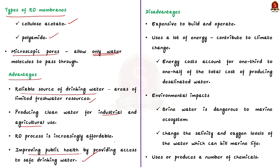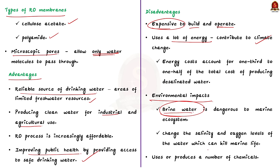Even though it has many advantages, there are still some concerns regarding desalination plants. First, these plants are very expensive to build and operate. Next, desalination plants use a lot of energy, which can contribute to climate change since it is an energy-intensive process. The environmental impacts are very huge. The concentrated salt water, called brine water, is a byproduct of the desalination process. Releasing this brine water into water bodies is dangerous for the marine ecosystem — it can change the salinity and oxygen levels of water, which can kill marine life. The desalination process also uses and produces a large number of chemicals like chlorine, carbon dioxide, hydrochloric acid, etc., which can be harmful to the environment in high concentrations.